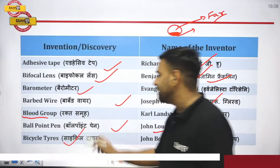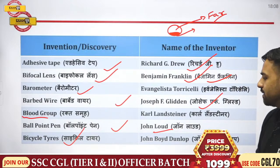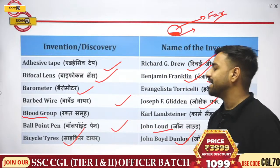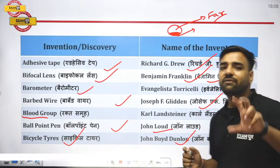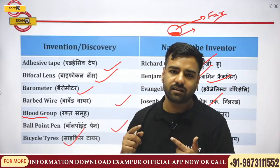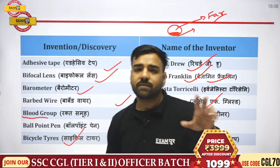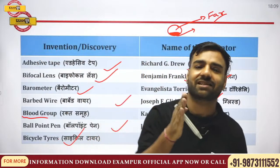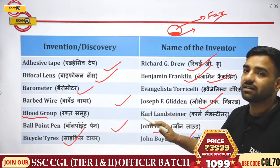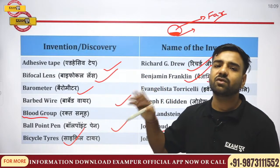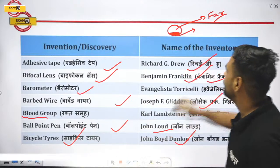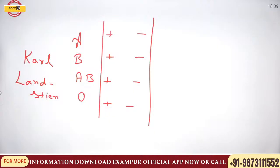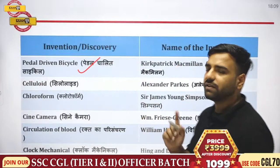Bicycle tires were discovered by John Boyd Dunlop. Now an important question: if I talk about the bicycle with pedals, who discovered it? This was studied in the fourth standard. The pedalled bicycle was discovered by Kirkpatrick Macmillan — please remember Macmillan as the correct answer.